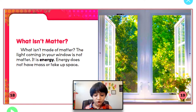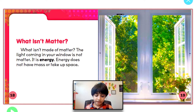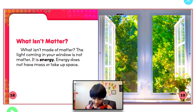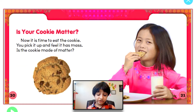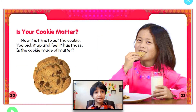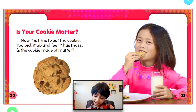What is not made of matter? The light coming in your window is not matter — it is energy. Energy does not have mass. So light is not matter.